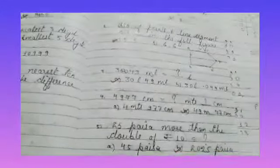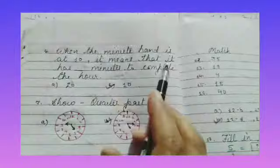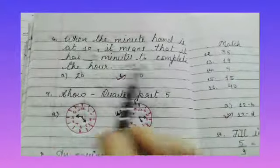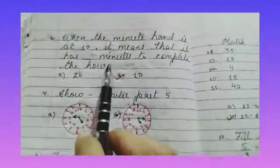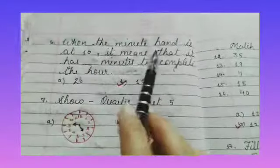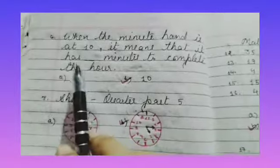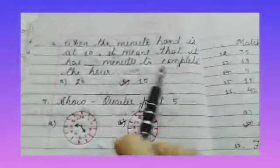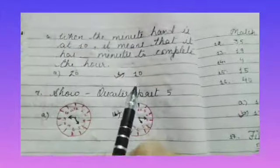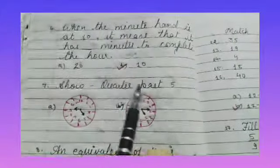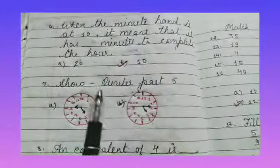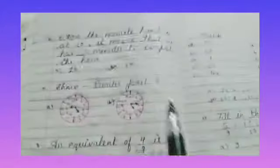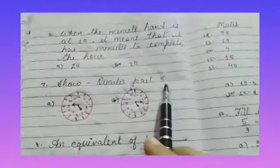Part B. When the minute hand is at 10, it means that it has complete dash minutes to complete the hour. When the minute hand is at 10, it means that the hour is full of 10 minutes. So quarter past 5, quarter means half and quarter means 15. Past means week, 5 means 5.